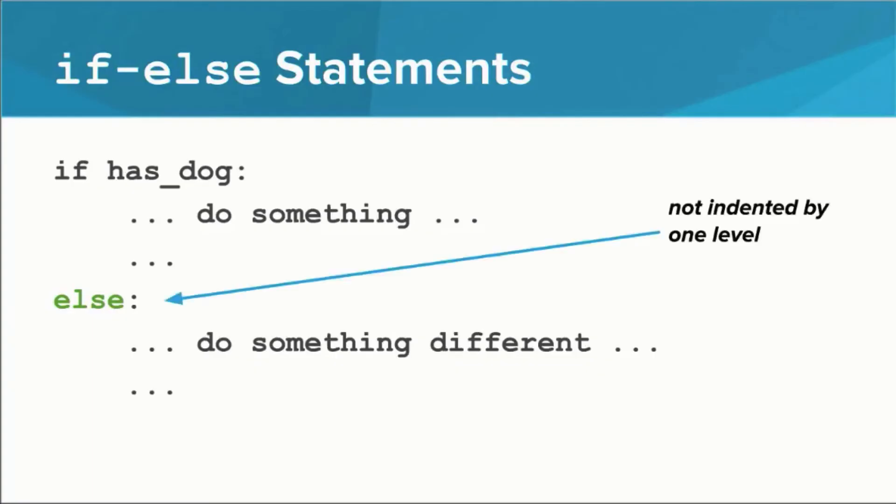The word else is not indented by one level. It should line up vertically with the word if. Then everything that should be executed if the condition was false is indented by one level. It should line up vertically with the code under the word if, but before the word else.